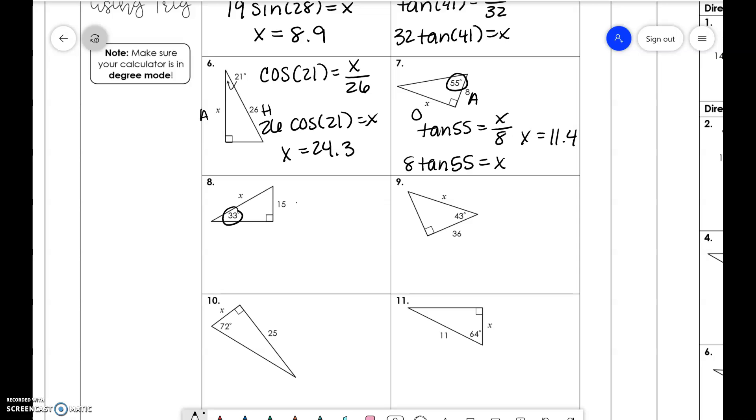Here we get a little bit different. We have opposite and hypotenuse. So sine of 33 is equal to 15 over x. We now have x in the denominator. So we have to go one step further than all of our other problems. So the same thing. We have x times sine of 33 is equal to 15. And now we need to divide 15 by sine of 33. So in your calculator, if you do 15 divided by sine of 33, you get x to be 27.5.